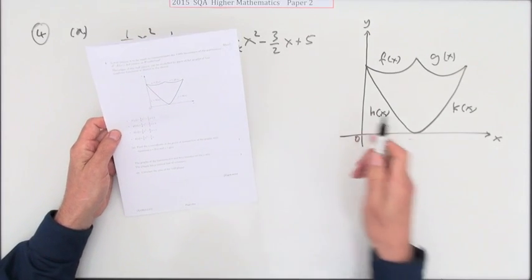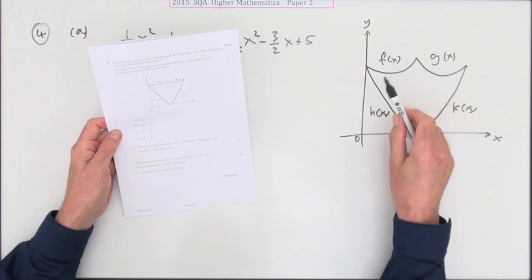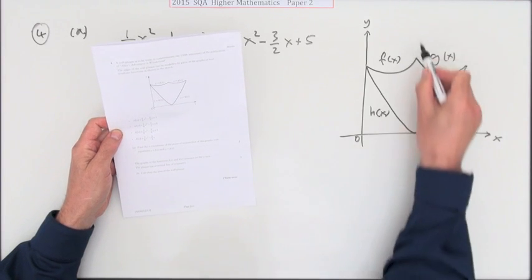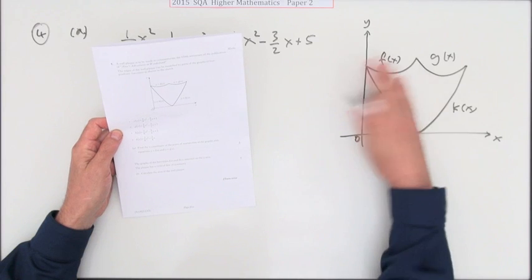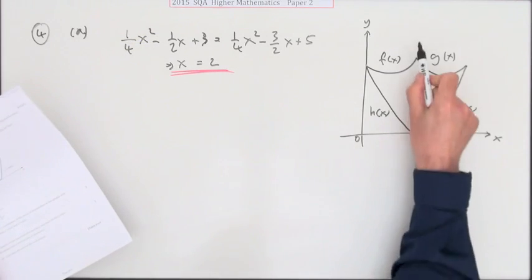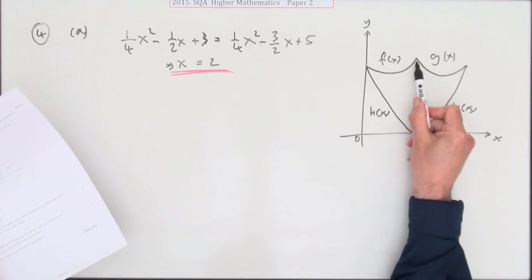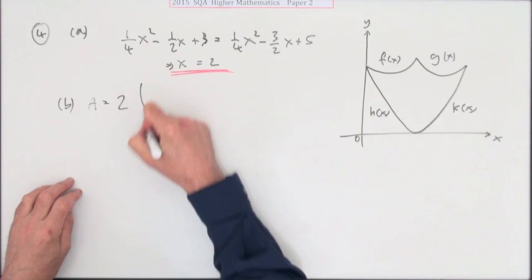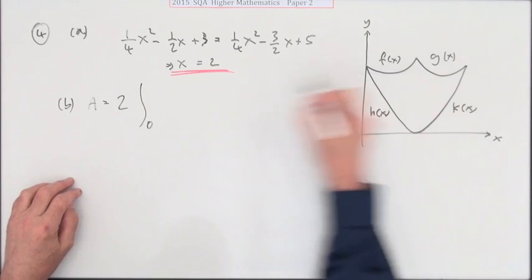Part B says the graphs of f(x) and h(x) intersect on the y-axis, and there's a vertical axis of symmetry, so the two halves are the same. That means you need to calculate one half and double it. The area of the whole thing for Part B will be twice the integral from 0 to 2.